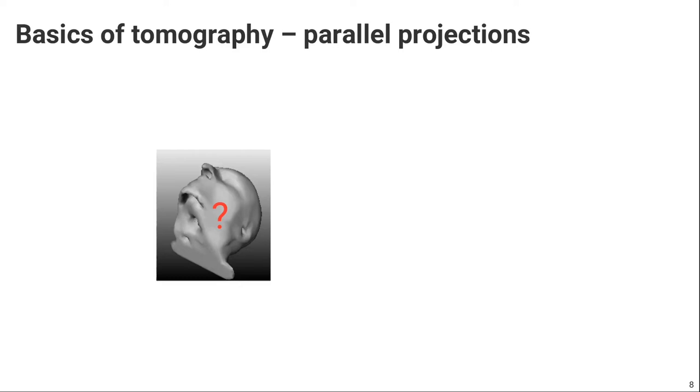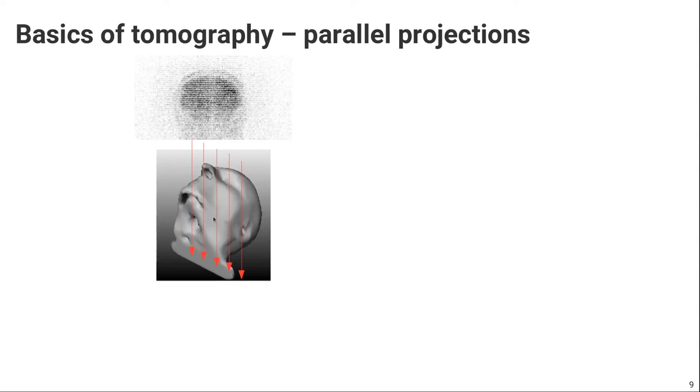Let's say we want to image the 3D distribution of a quantity of interest. In nuclear medicine that would be the activity or the tracer concentration of our radiotracer. Let's say we have a brain here, so we have 3D distribution of the tracer in the brain.